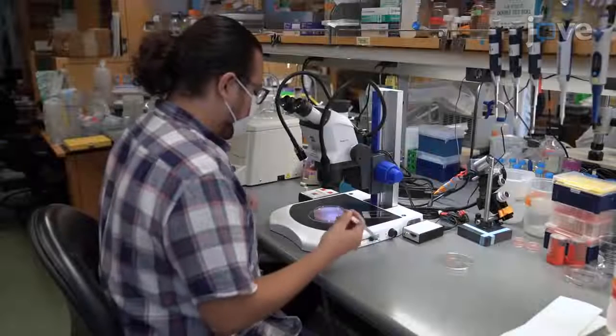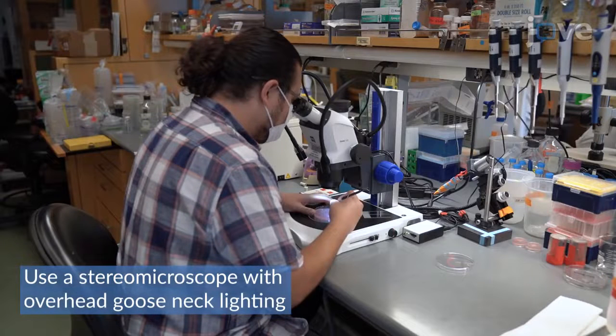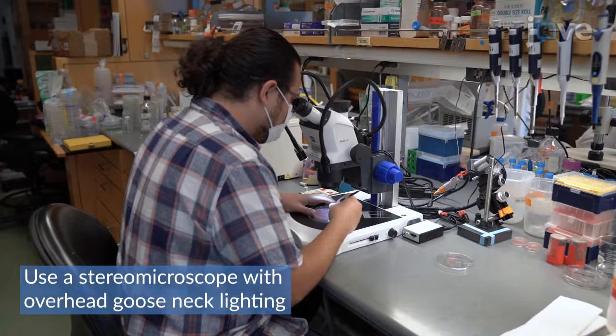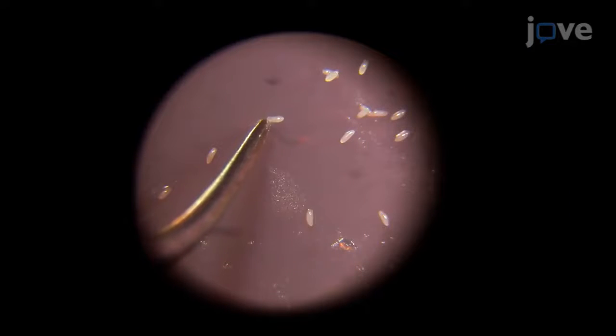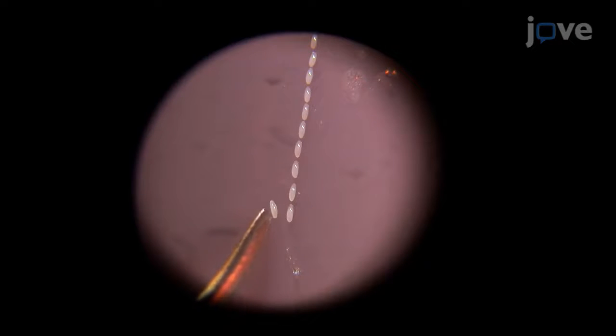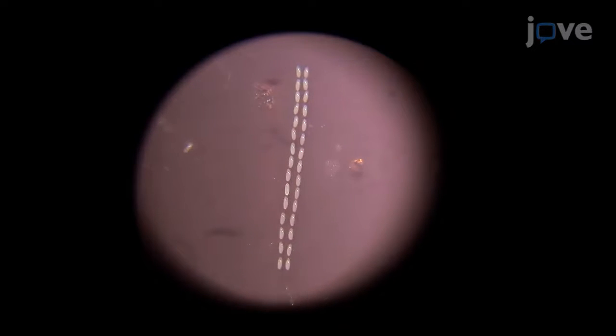To begin, organize two rows of 15 to 20 embryos on a clean section of grape plate using an egg picker tool. Align the embryos on their ventral side in the same orientation with respect to anterior and posterior ends.